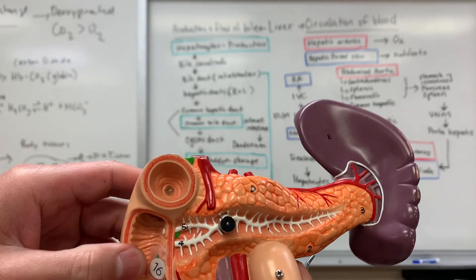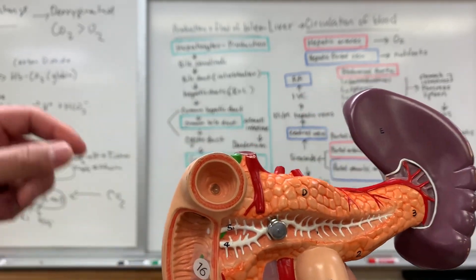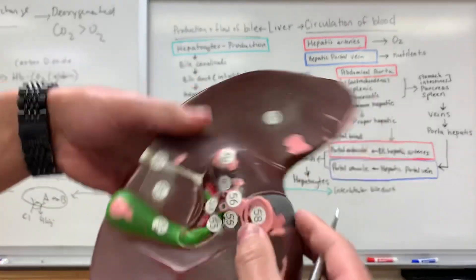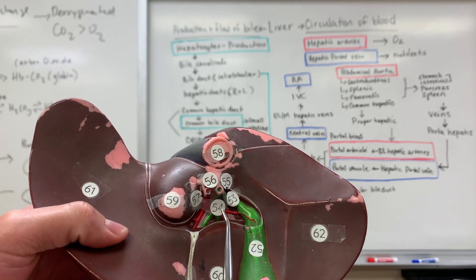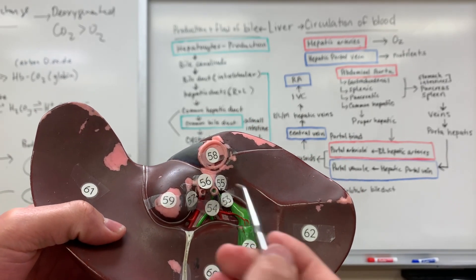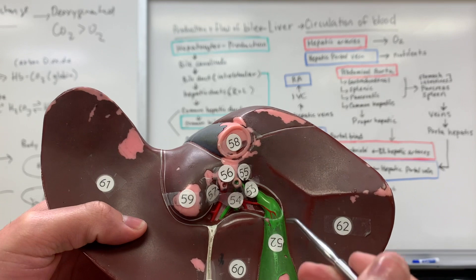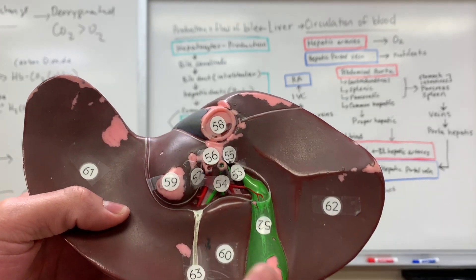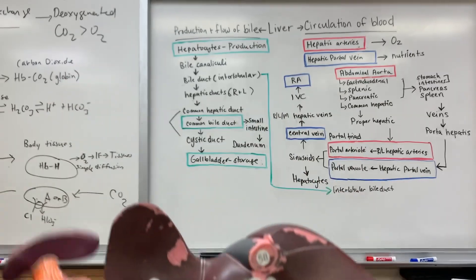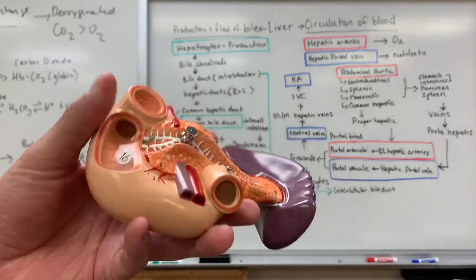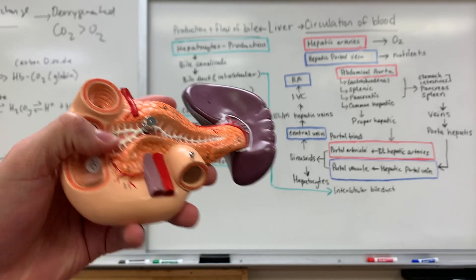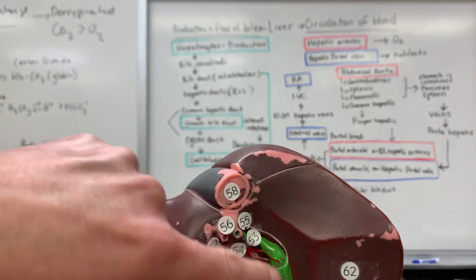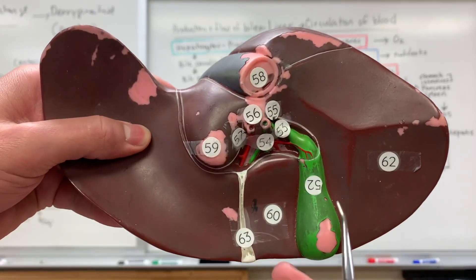And so another thing to note is that, remember, whenever we look at it from here, so bile is produced here and then it flows downward. But the reason that it's able to get backed up here into the gallbladder is because the sphincters are closed here. So if these sphincters are closed, as the bile will flow down into the common bile duct, it then gets backed up and then it gets stored here within the gallbladder.